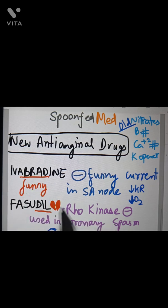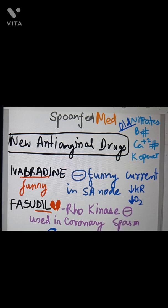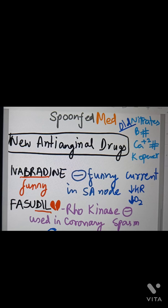First is ivabradine. 'A brad' is trying to be funny — hence it's an inhibitor of the funny current in the SA node. It decreases the heart rate as well as the oxygen required by the heart.